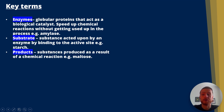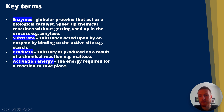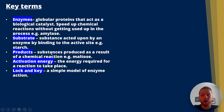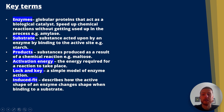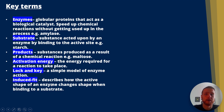Products are substances produced as a result of a chemical reaction — for example, maltose. Starch is broken down to maltose by the enzyme amylase. Activation energy is the energy required for a reaction to take place. Lock and key is a simplistic model of enzyme action. The induced fit describes how the active site changes shape when the substrate binds, and this is more of an A-level explanation for enzyme action.